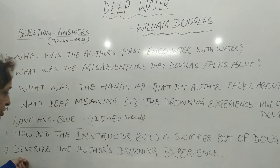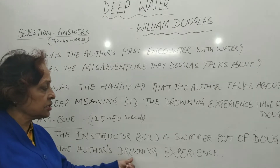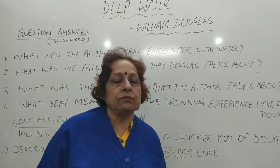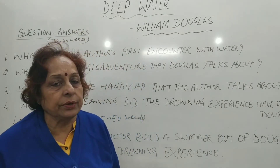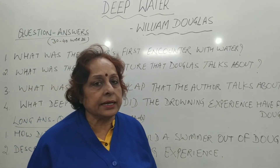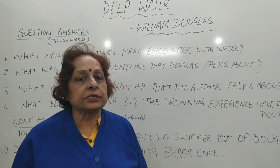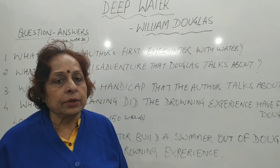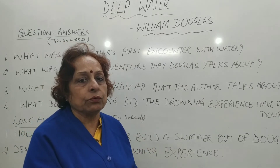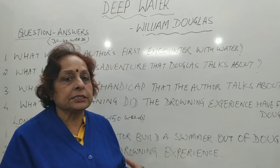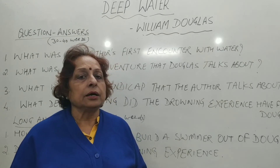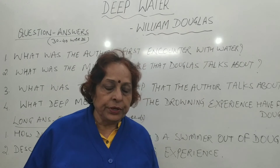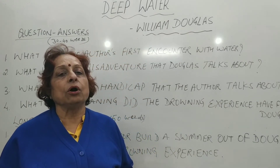The second long answer question: describe the author's drowning experience. When Douglas was waiting for the other children to come, he was alone at the pool, sitting at the edge, scared of going into the water alone. A big boy of 18 years came and, out of fun, picked him up and threw him into the deeper side of the pool. He started drowning. While drowning, his mind was active — he had a plan: as soon as he would touch the bottom, he would jump up to the surface and get to the edge.